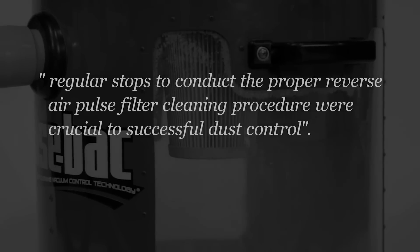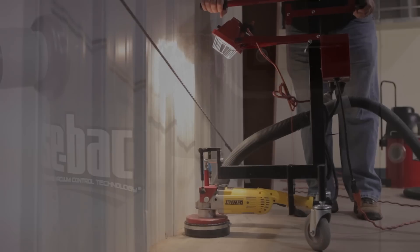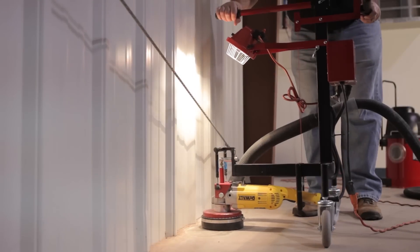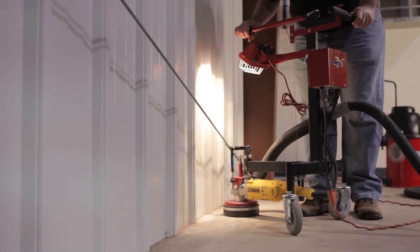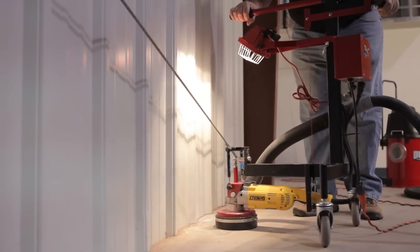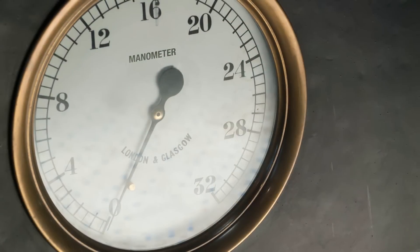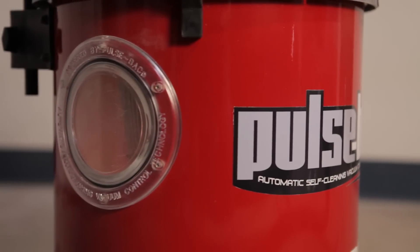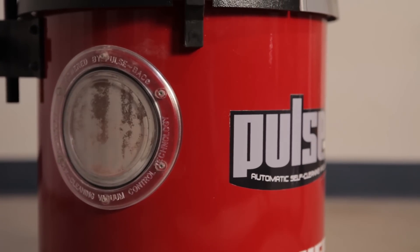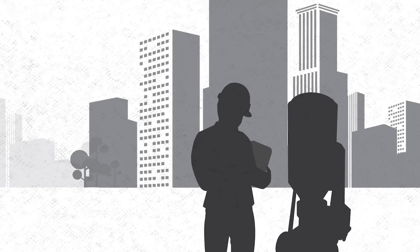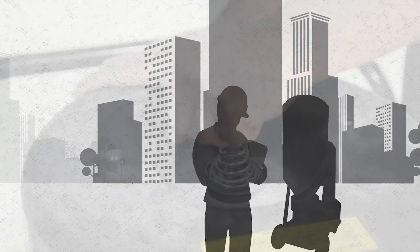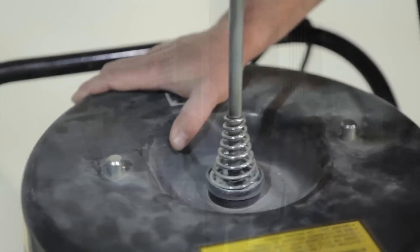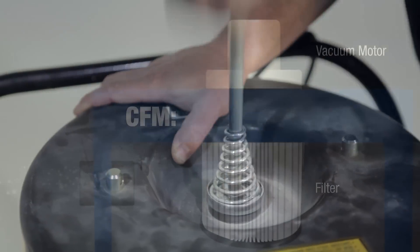Then, in a different section, we find the statement: to assist employees in determining when it is time to run a filter cleaning cycle, vacuums equipped with a gauge indicating filter pressure or equivalent device — e.g., a timer to periodically pulse the filter — may be useful. So here, it becomes clear that filter cleaning will play an important part in compliance, and dust collectors will have to be monitored and filters cleaned frequently.